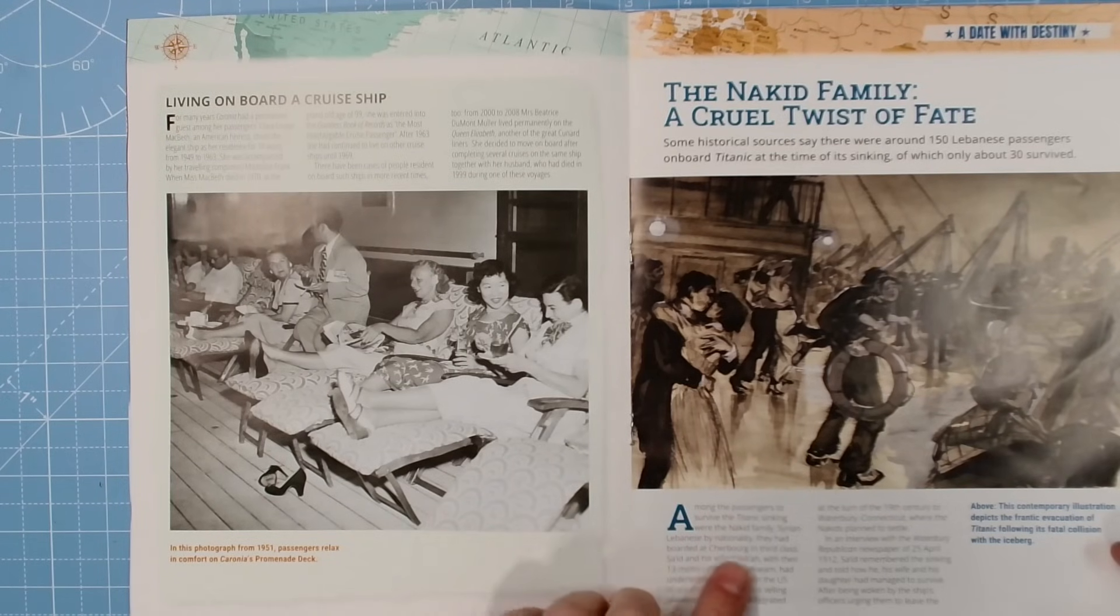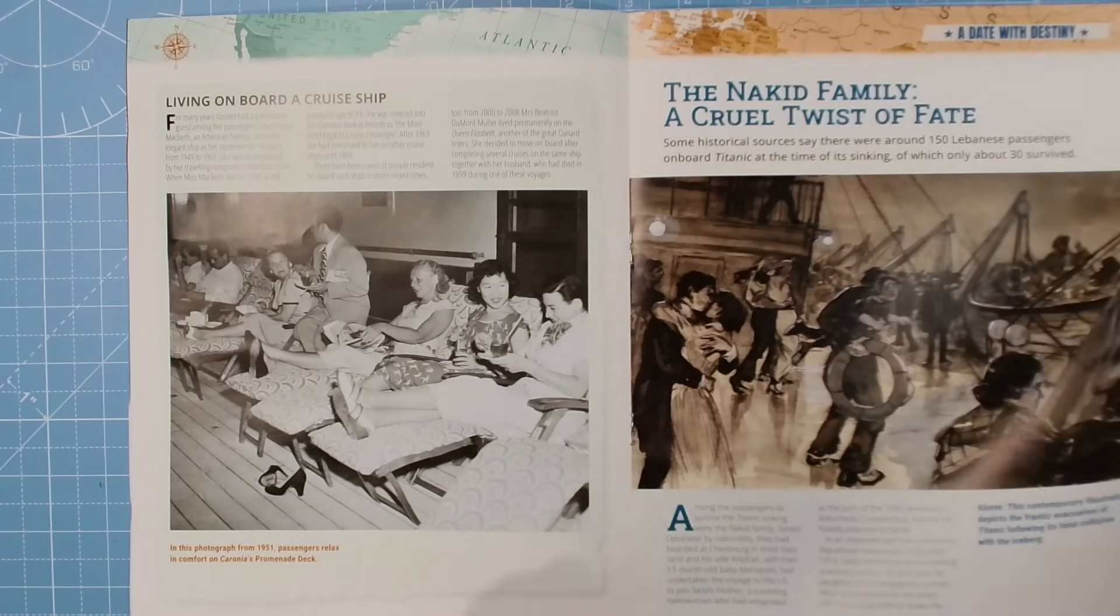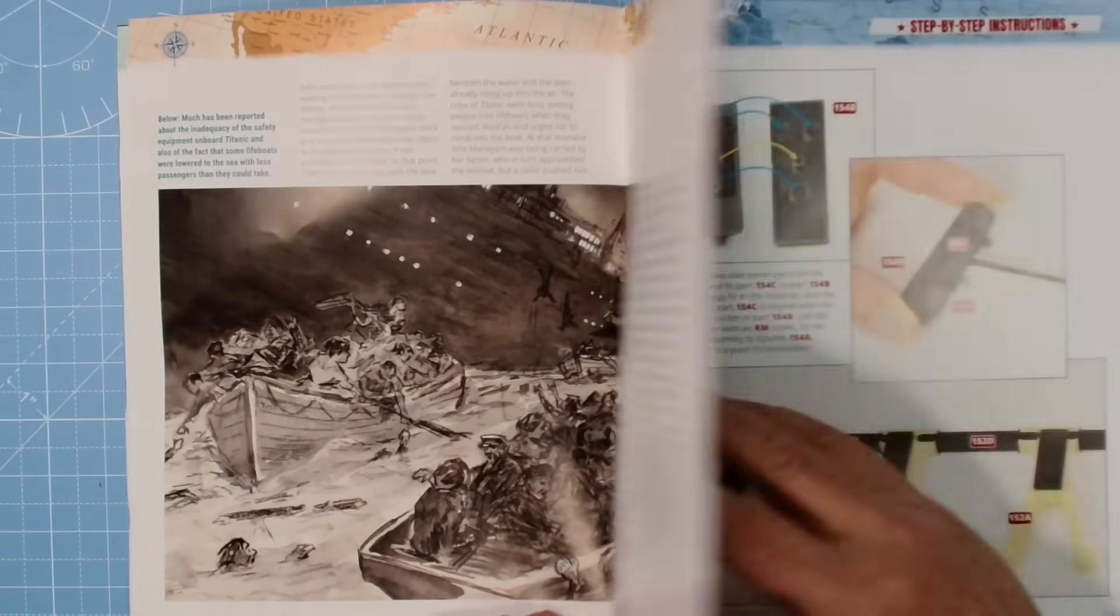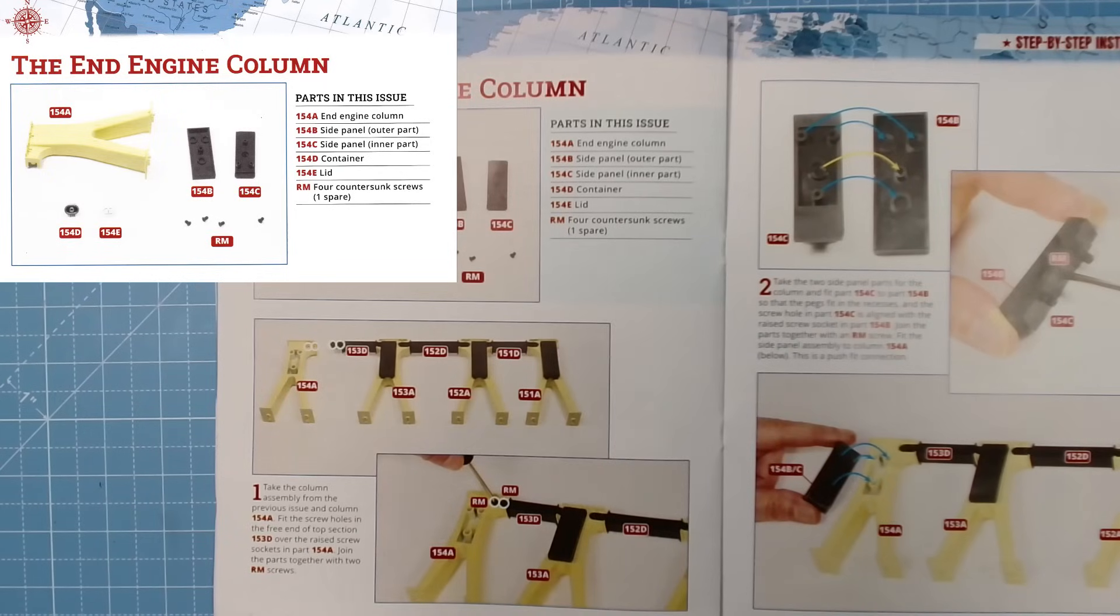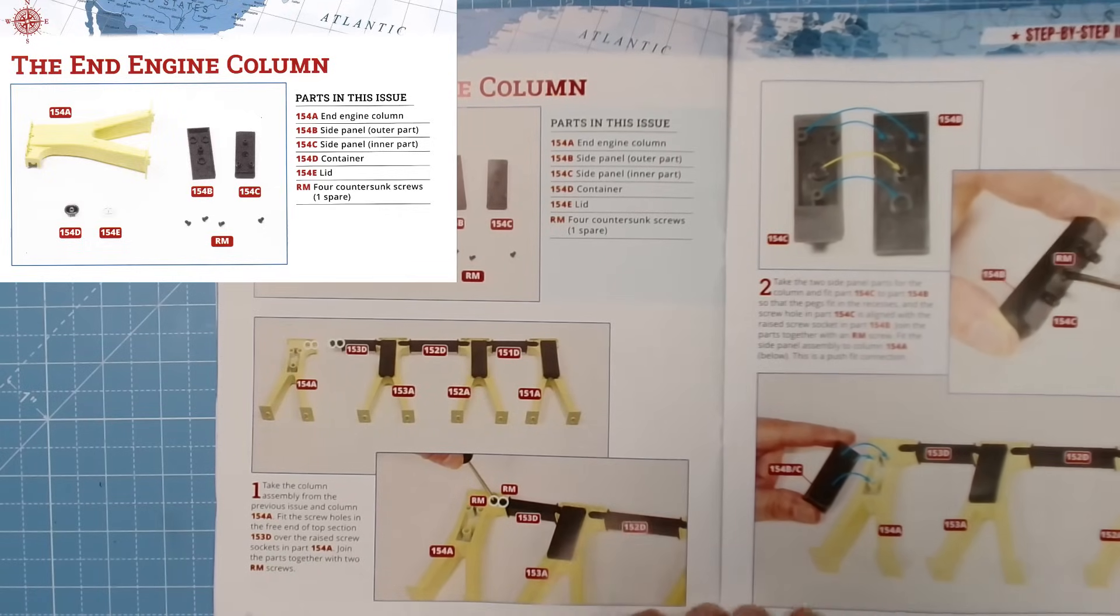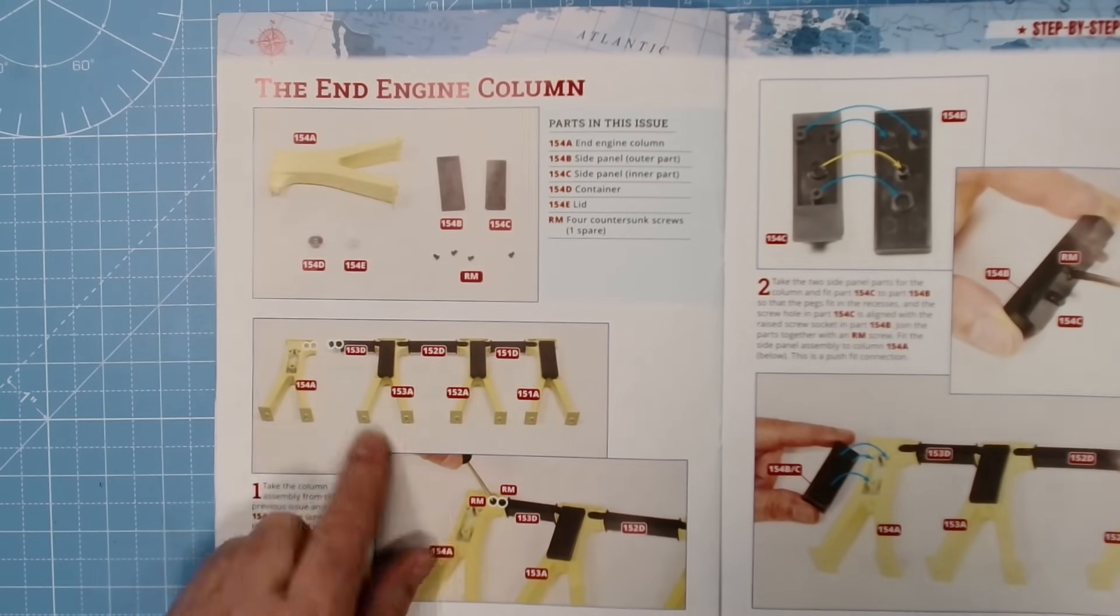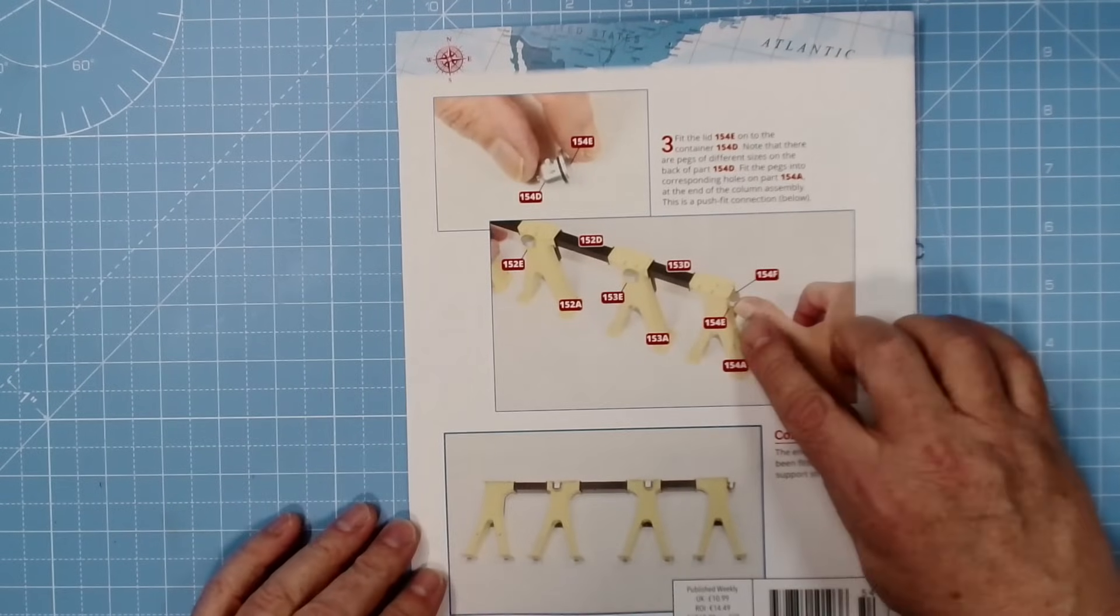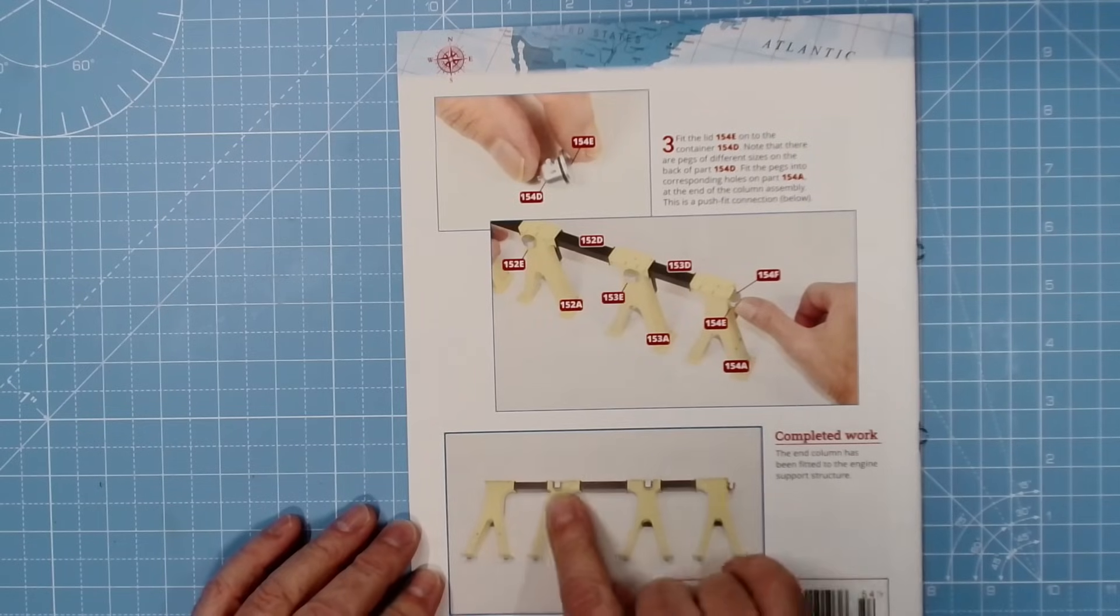Here we have living on board a cruise ship, story of the family on Titanic, I think they were Lebanese Syrian Lebanese tragedy. Of course there's an artist's impression. So here we have the parts, the end engine column, we have 145A end engine column, 145B side panel outer, 145C side panel inner, 145D container and 145E lid with RM screws.